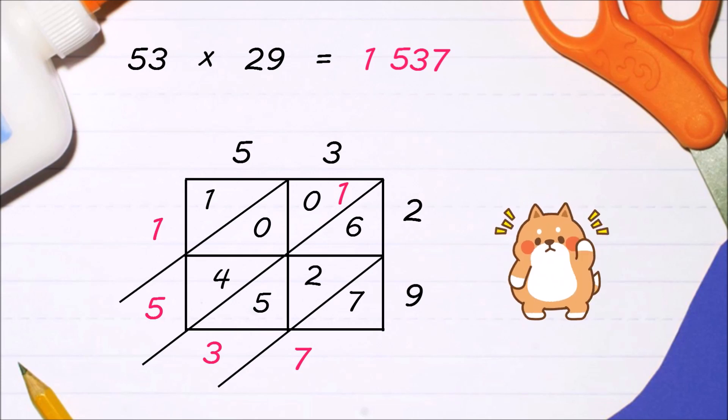Let's continue. This time, we will multiply 3 digit by 2 digit numbers. Just like before, the process is still the same.